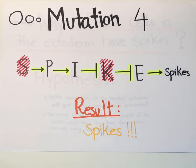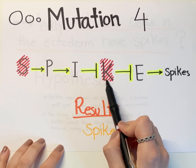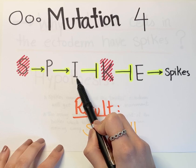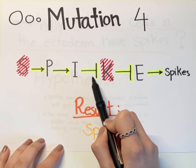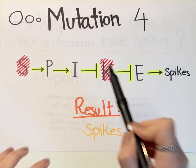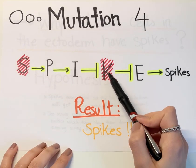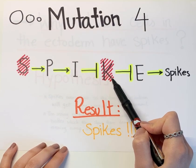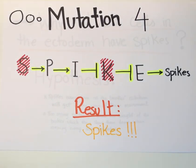In this last scenario, we have the double mutation of S and K genes. If S is not present, P will not be activated and as a result, I will not be activated and it will not be able to inhibit K. But it's okay because we don't have K genes in the system anyway. If we lose K, then E gene won't be blocked, so it can activate the spikes. So in this scenario, we will have spiky cells.